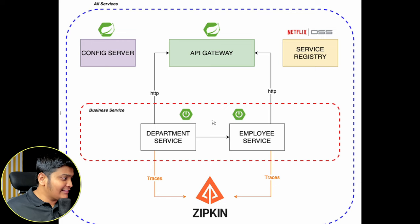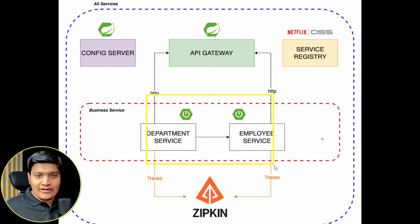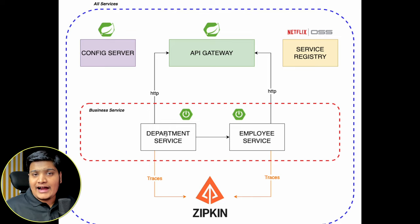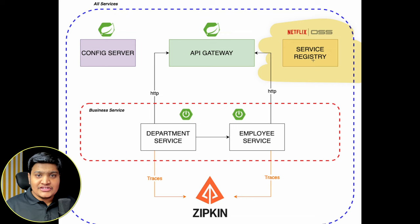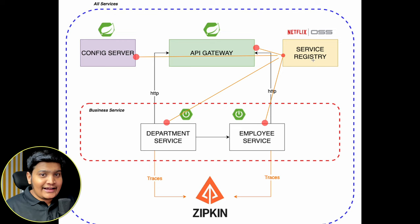These are the business services layer and there are other services that will help all business services work together. For both services there will be a different database attached, because in the microservices world everything should be separated out. Department Service will have its own database, Employee Service will have its own database, and if we want data we will get it via API calls only — we won't directly connect to the other database. The next thing is the Service Registry.